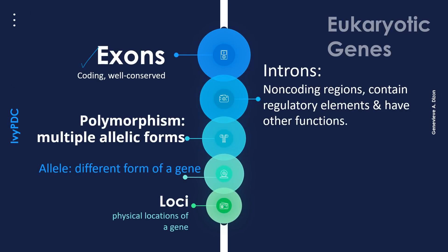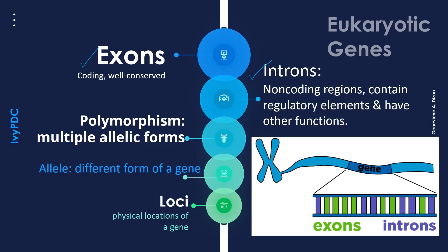Eukaryote genes have exons and introns. The main difference is that exons are the coding regions, while introns are the non-coding regions. Exons stand for expressed sequences, because they have the codes needed to make proteins, while introns are the intervening sequences, because they interfere with the whole process. Exons are well-conserved, meaning nucleotide sequences do not vary among individuals in a species, while introns may contain regulatory or transcriptional elements and may also have other functions.